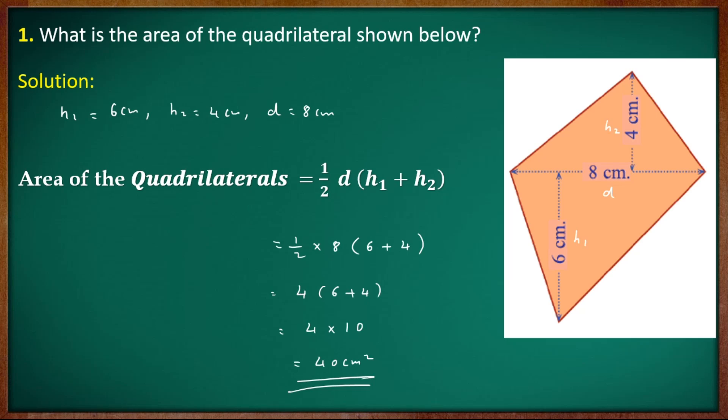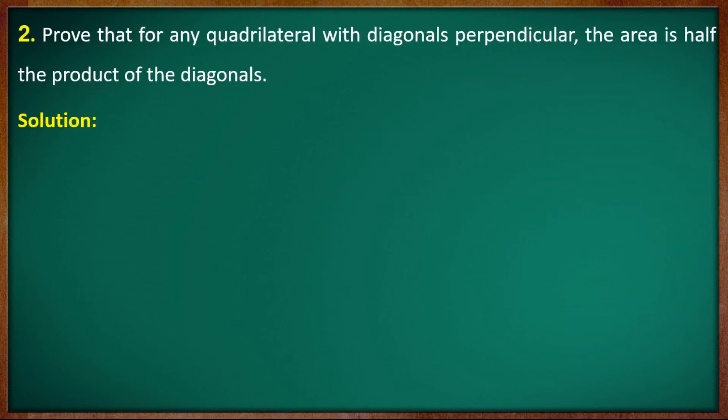Next question: Prove that for any quadrilateral with perpendicular diagonals, the area is half the product of the diagonals. The diagonals are D1 and D2, and the area is half the product of the diagonals.